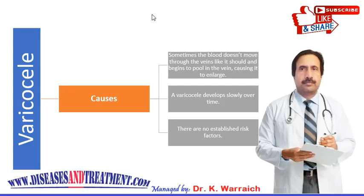The spermatic cord holds up each testicle and contains the veins, arteries, and nerves that support these glands. The veins inside the scrotum move blood from the testicles and send it back to the heart. Sometimes blood does not move through the veins as it should and begins to pool in the vein, causing it to enlarge.